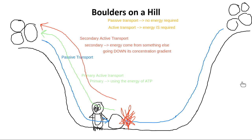Nicole has a question about the diagram. The boulder on the right-hand side comes down — which is passive — does it then go back up the other side or stay down in the middle?